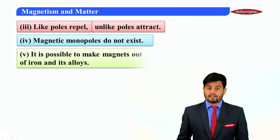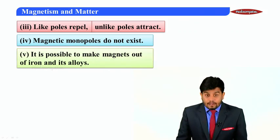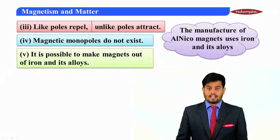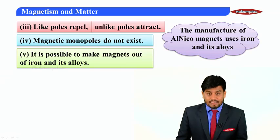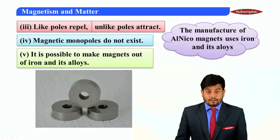It is possible to make magnets out of iron and its alloys. We can manufacture magnets with the help of iron and its alloys. For example, the manufacture of Alnico magnets uses iron and its alloys. Alnico is aluminium, nickel and cobalt.